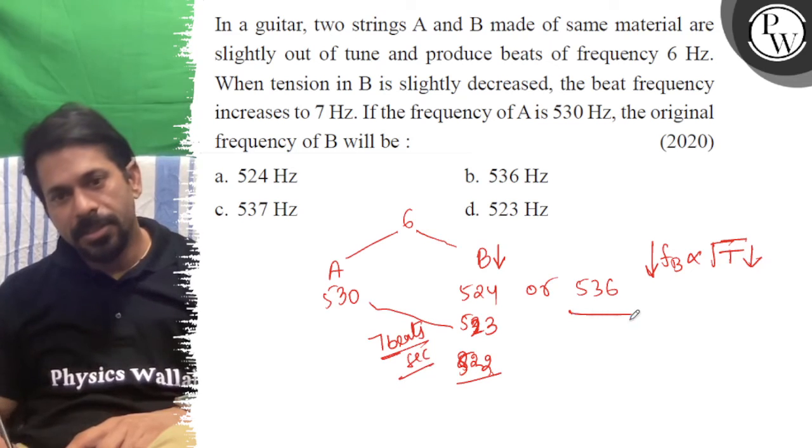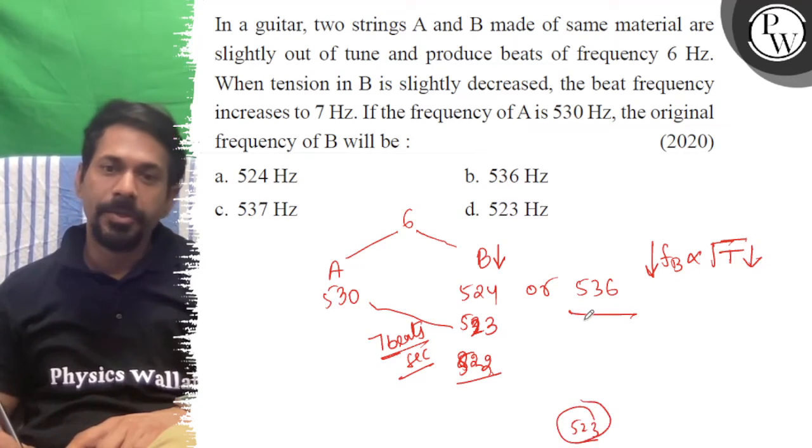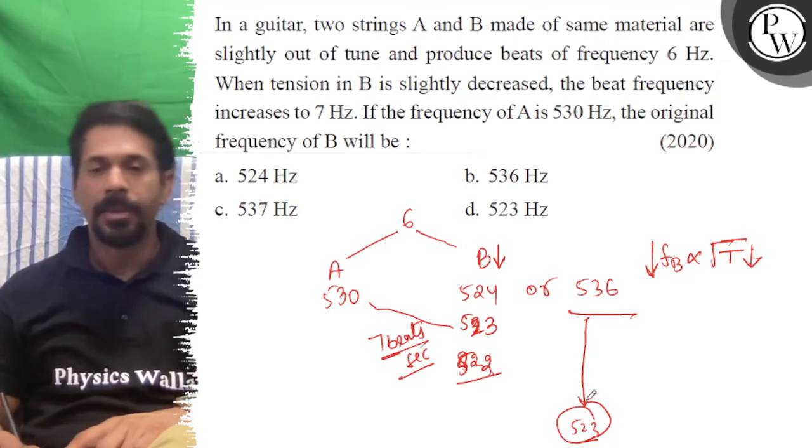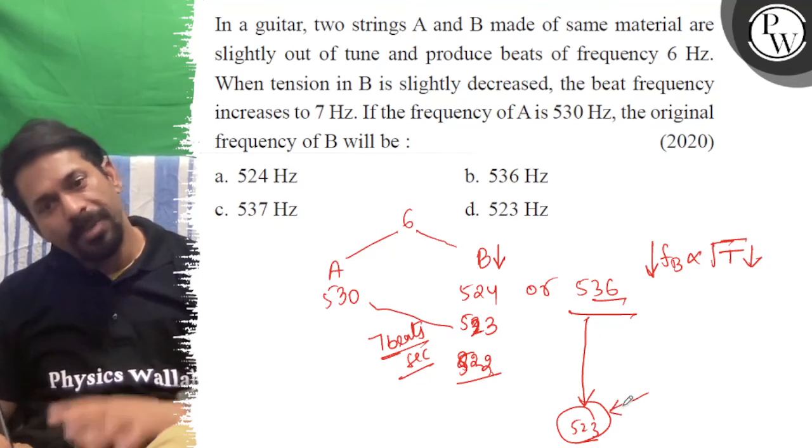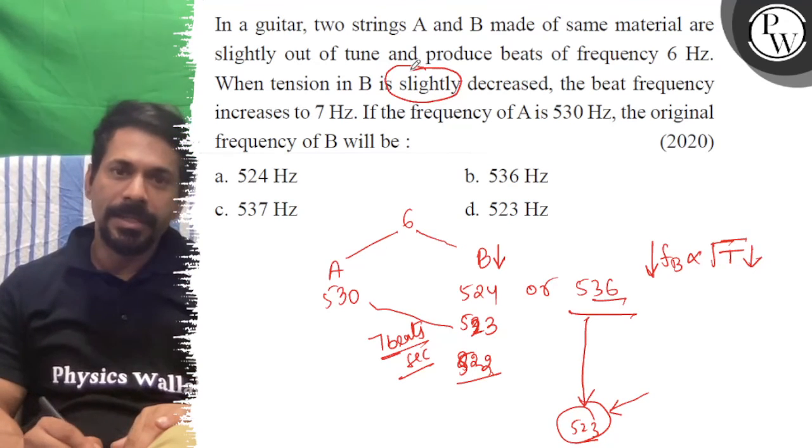When we get 523, we will get a huge decrement. So if we get 536 to 523, we will get a decrease, but we will not get that decrease because it is slightly decreased.